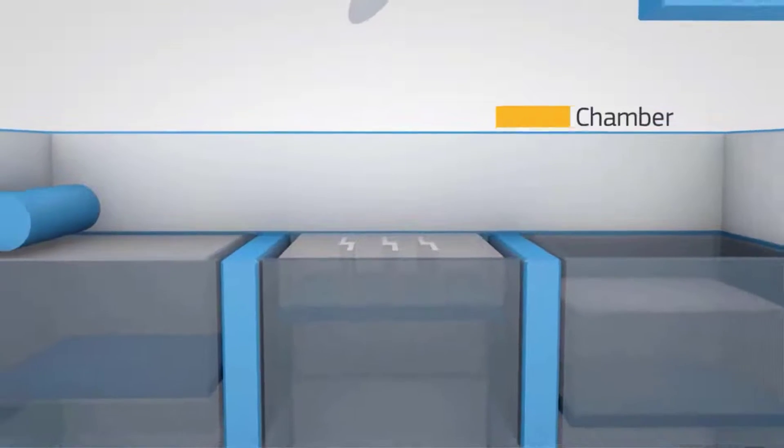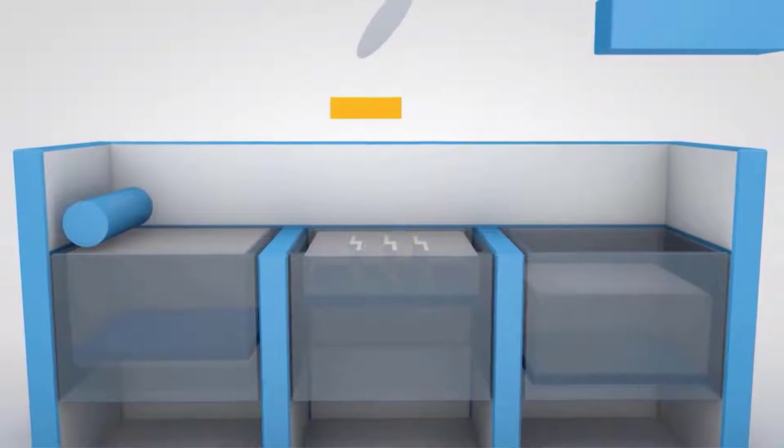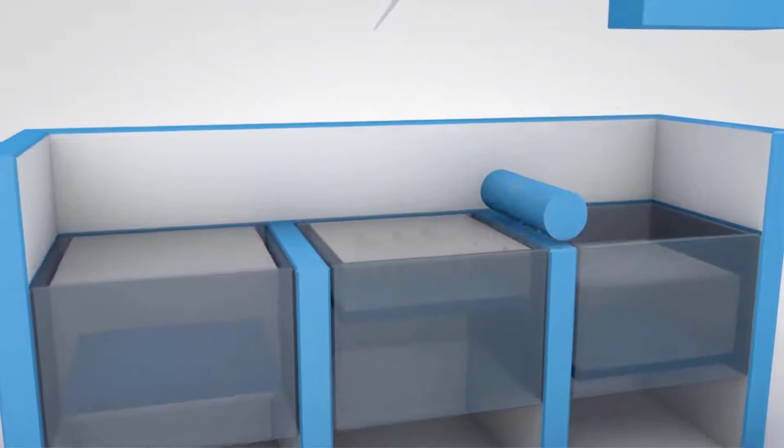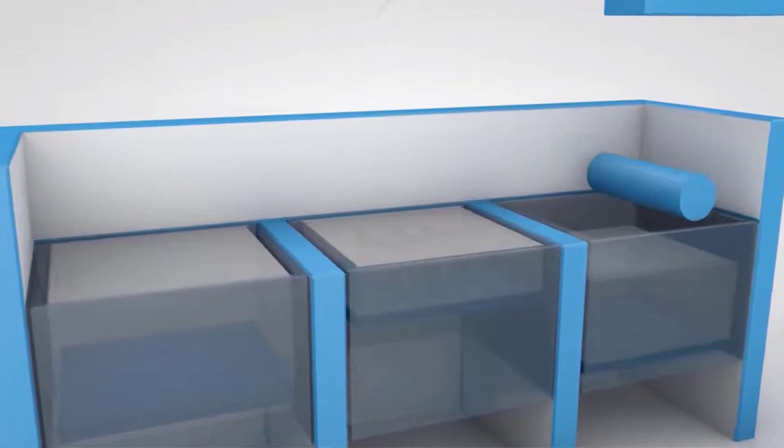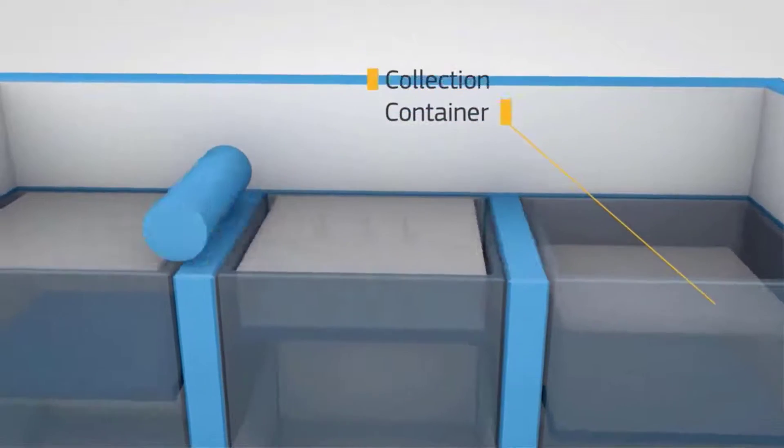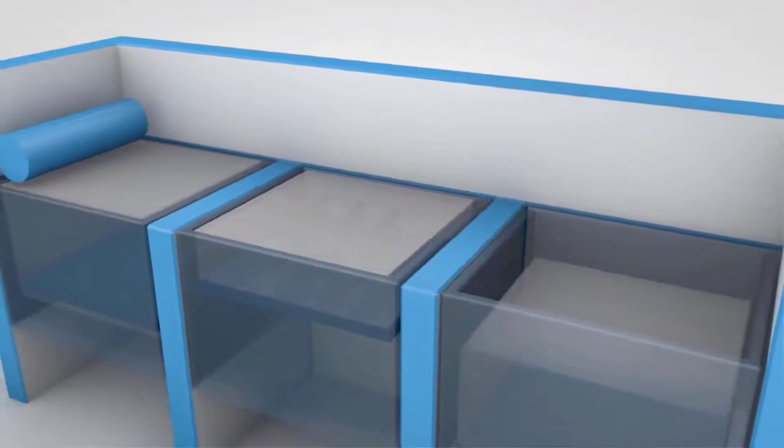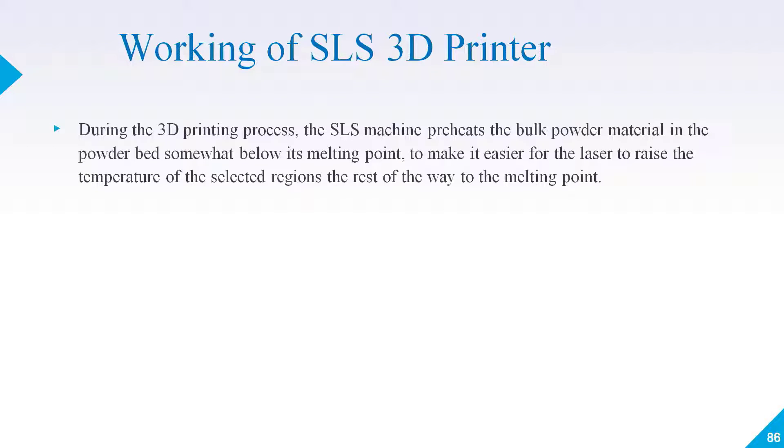Now let's talk about the working of SLS 3D printers, how selective laser sintering works, and what are the different stages of working. During the 3D printing process, the SLS machine preheats the bulk powder material. Our raw material is in powder form, and when we melt the powder, the powder will diffuse and make a layer.